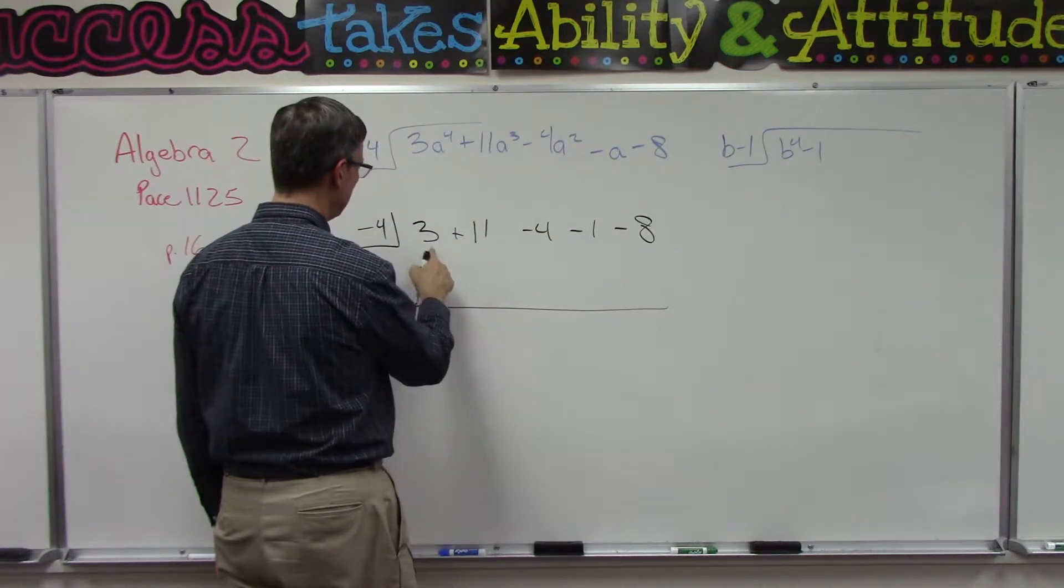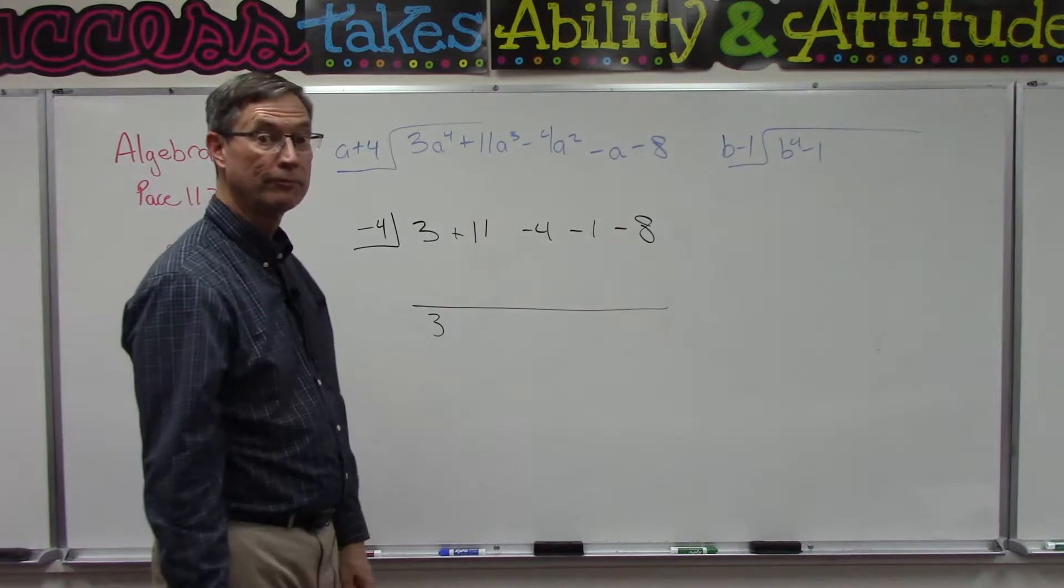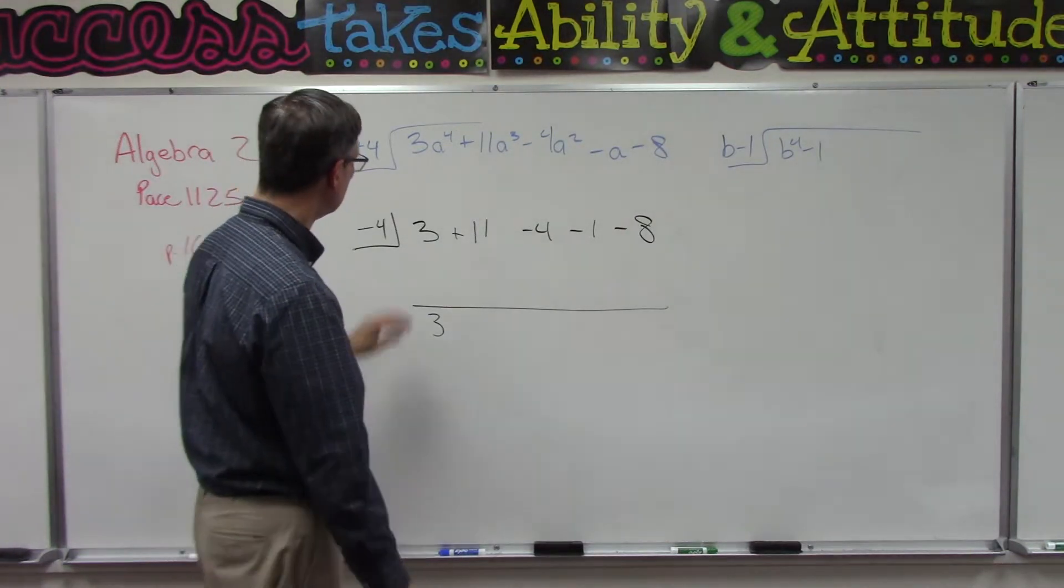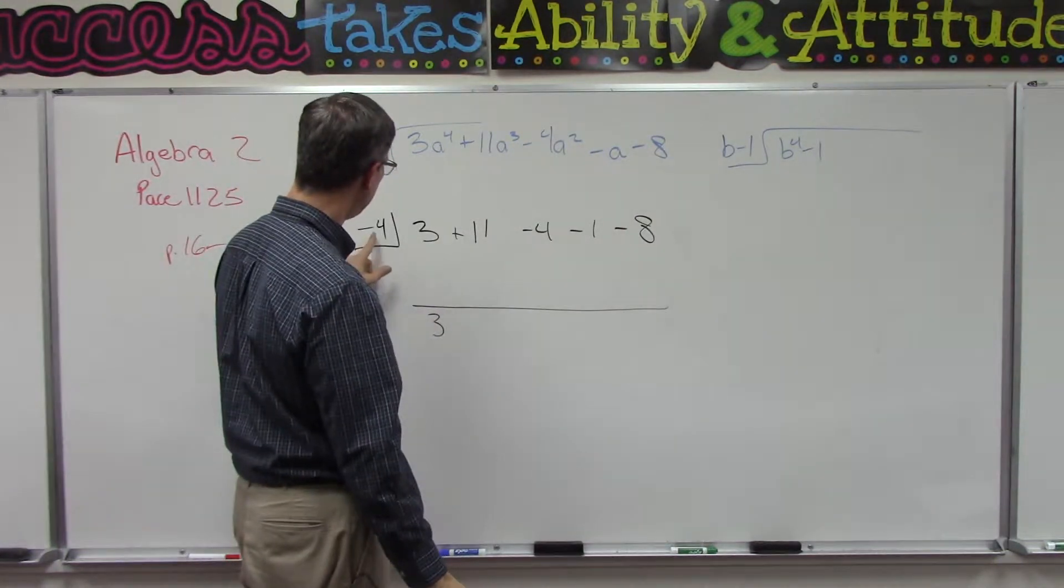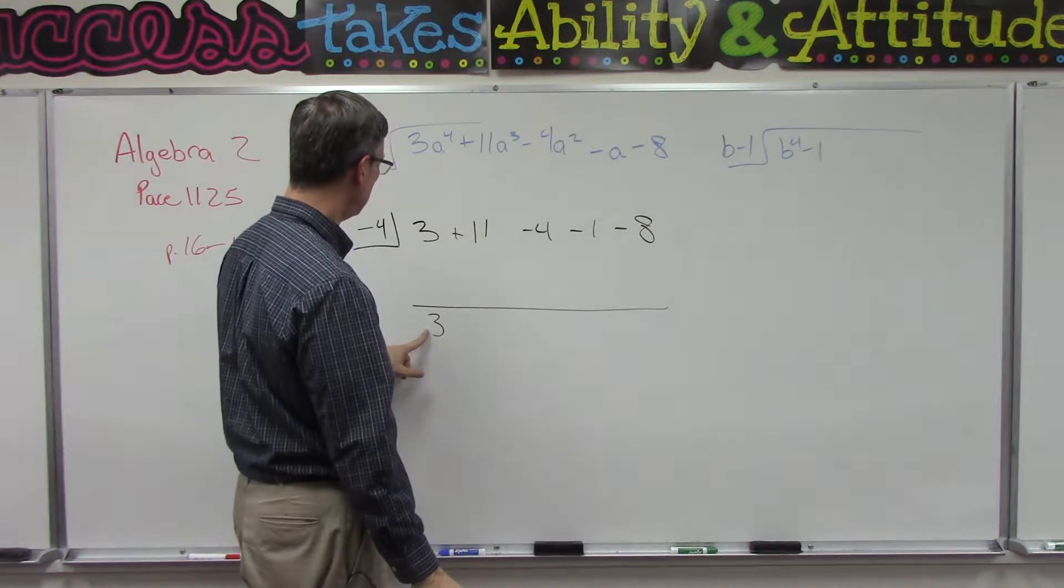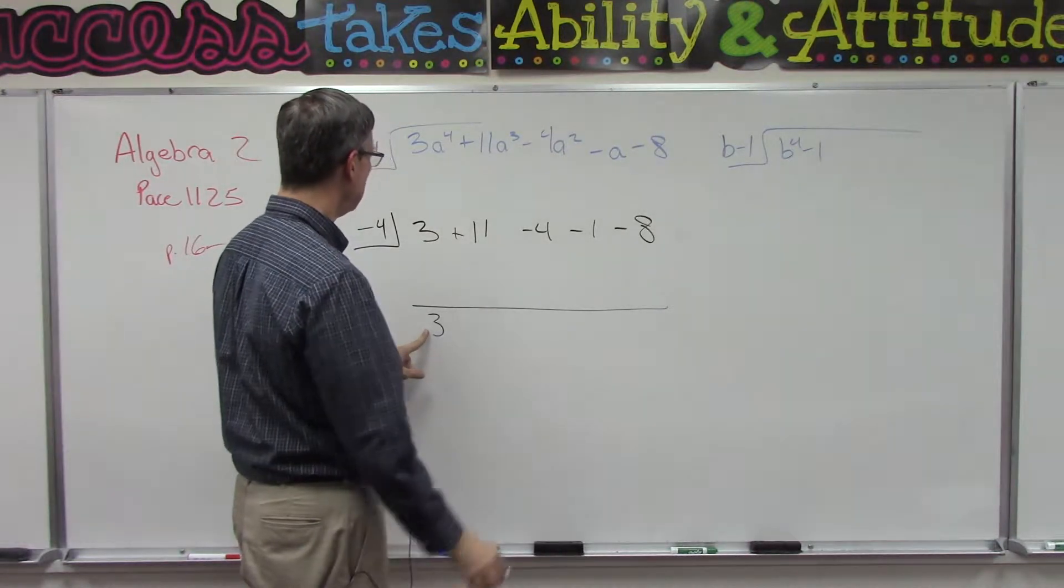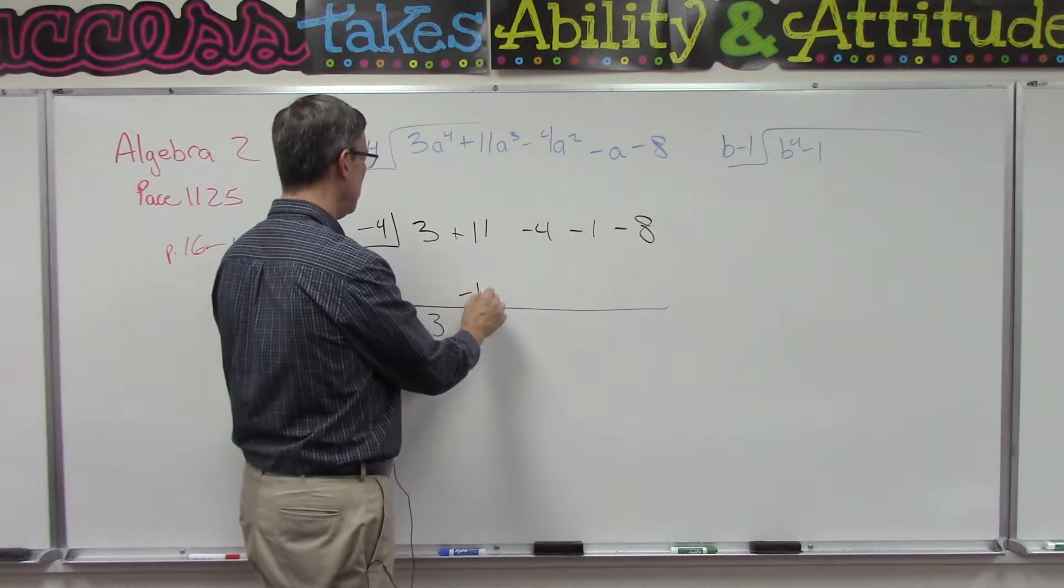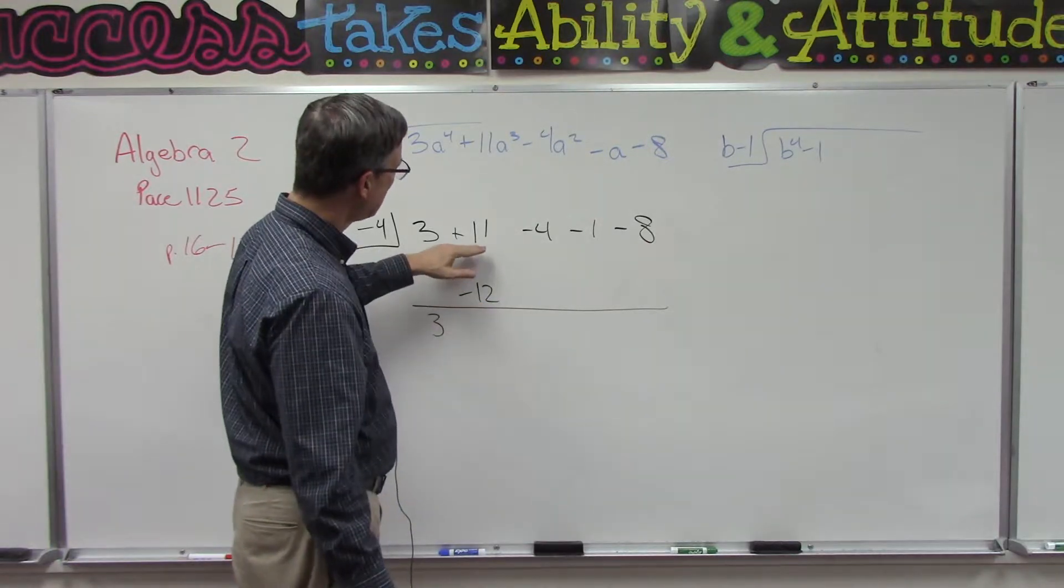Nothing goes right here. We're going to take negative 4 times 3 and that gives us negative 12, which we put right here. Now we can add: 11 plus negative 12 is negative 1.